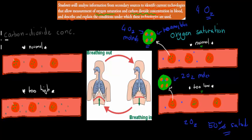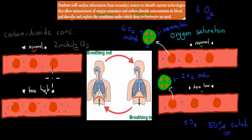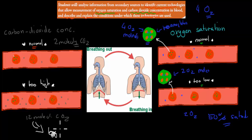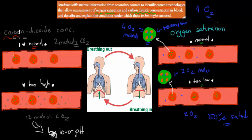Now for carbon dioxide concentrations — imagine this is our normal concentration, so we have two molecules of CO2 in our blood. And here we have 12 molecules of CO2. Remember the connection between CO2 and pH: the more CO2 we have in our blood, the lower our pH. So lower pH means our blood is acidic. If we have too-high CO2 levels in our blood, that means it's going to have a low pH, and that would mean we're going to suffer because our blood is too acidic. So we want to make sure we have a way to measure these carbon dioxide concentrations, because having too low or too high pH is bad.